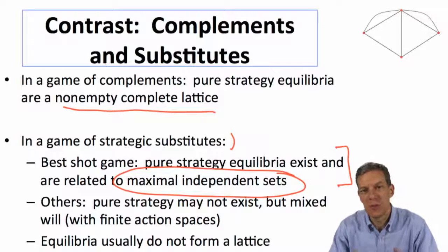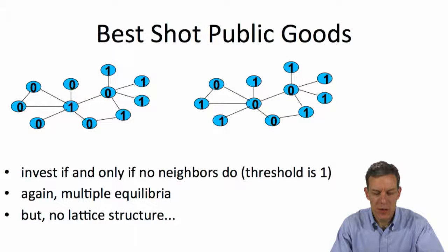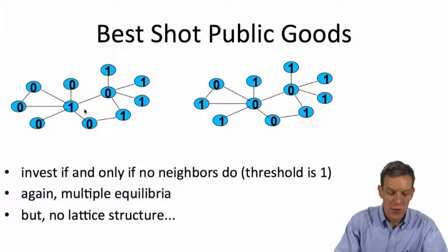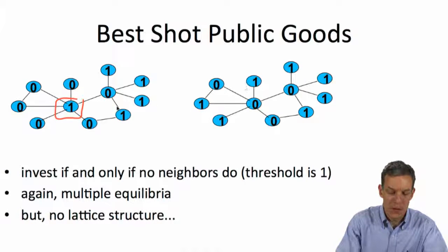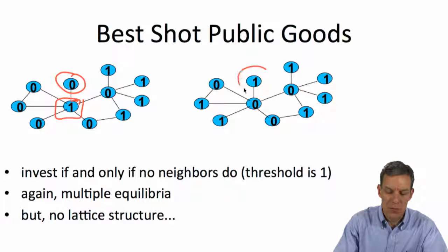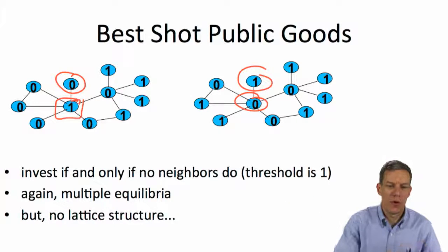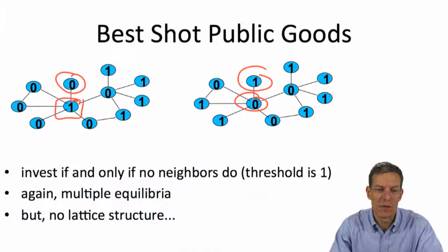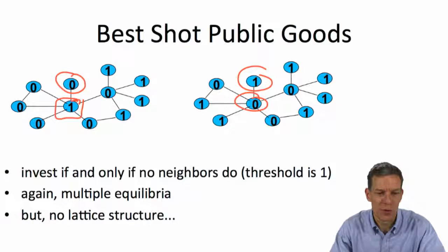Games of strategic substitutes are more difficult to deal with and harder to say things about than games of strategic complements, which have this nice mathematical structure to the equilibria. In the Best Shot Public Goods game, as we flip individuals on or off, that affects what's happening — one person does a one, another does a zero, or vice versa. There's not going to be a better equilibrium or a lower one in any ordering sense. Finding all the maximal independent sets can be quite difficult, and in fact is a difficult computational problem in computer science. There can exist multiple equilibria and no lattice structure.